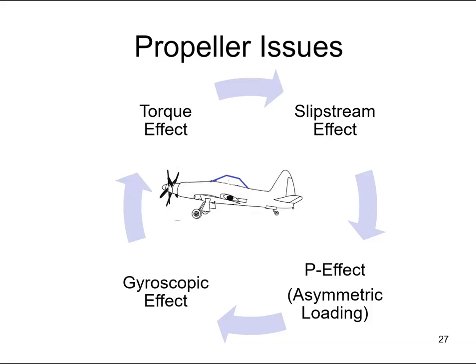There are some side effects to operating with a propeller: the torque effect, the slipstream effect, the P-effect, and the gyroscopic effect. If we fit a counter-rotating propeller — effectively two propellers driven by the same engine, one rotating to the right and the other rotating to the left — each propeller will have an equal and opposite effect, so they should cancel each other out.